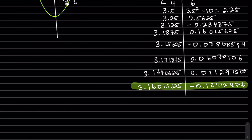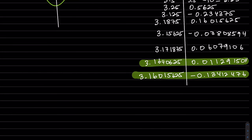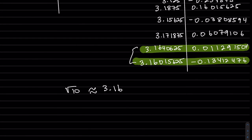We do it one more time using those two, and it's clear we don't even need to go further. The value is somewhere in between those bounds, and we found the square root of 10 accurate to two decimal places. If you check with your calculator, we're somewhere in between there. That's it for today, thanks.